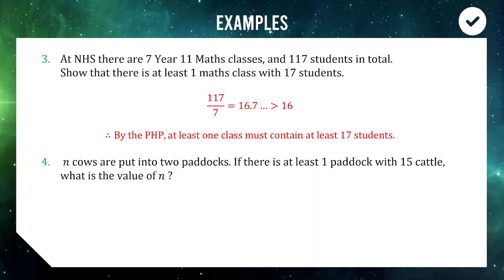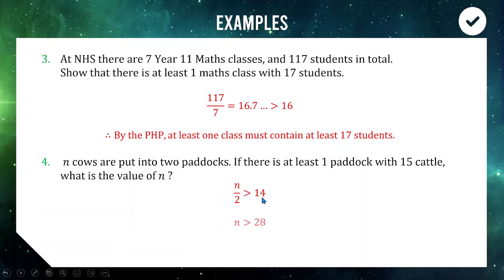Question four uses reverse logic. If n cows are put into two paddocks and there is at least one paddock with 15 cattle, what is the value of n? We need n divided by 2 to be greater than 14, so multiplying across gives n is greater than 28. The smallest possible value of n is therefore 29 — with 29 cows shared between two paddocks, you'll always have one paddock with at least 15 cows.